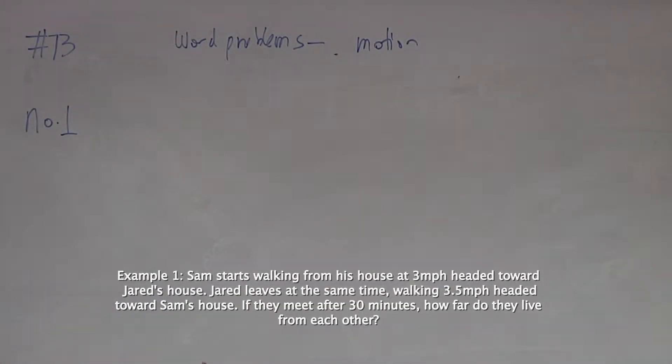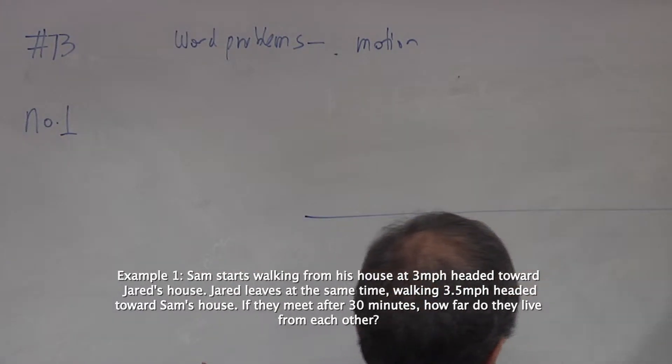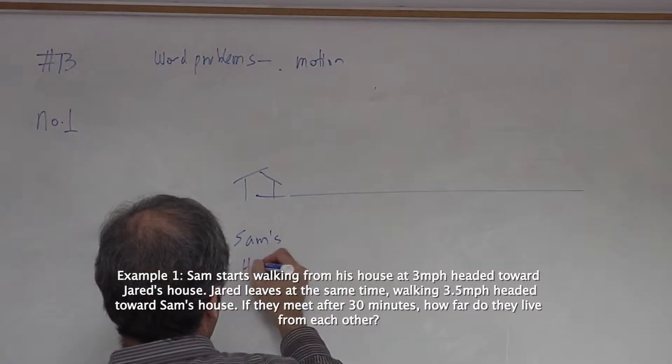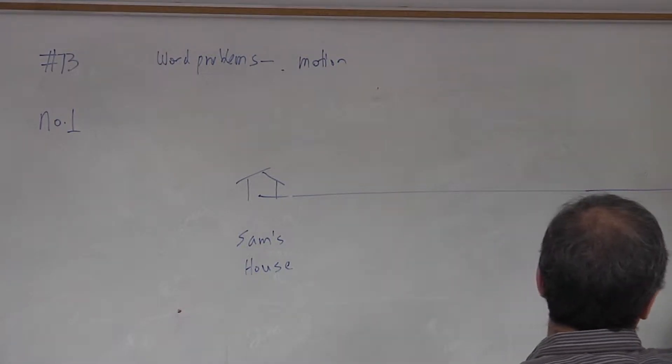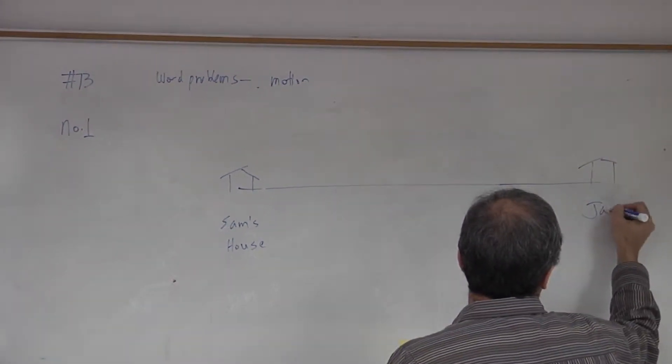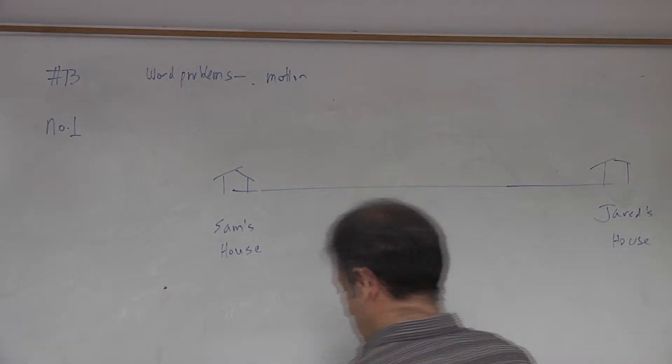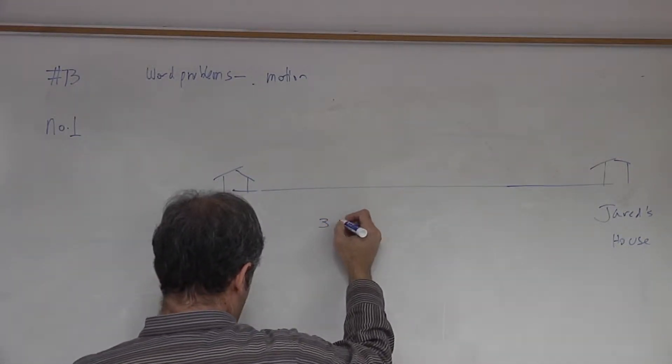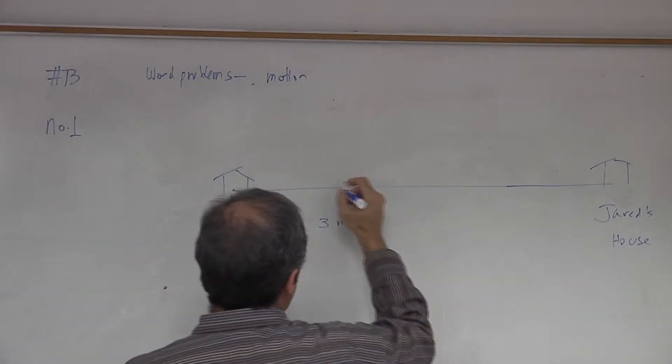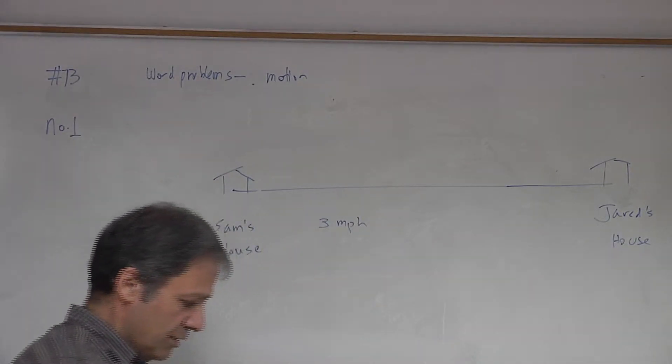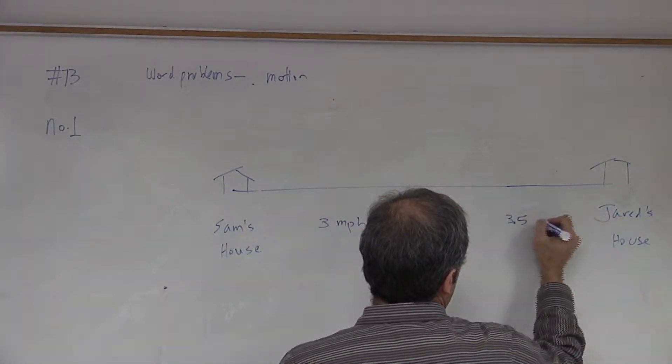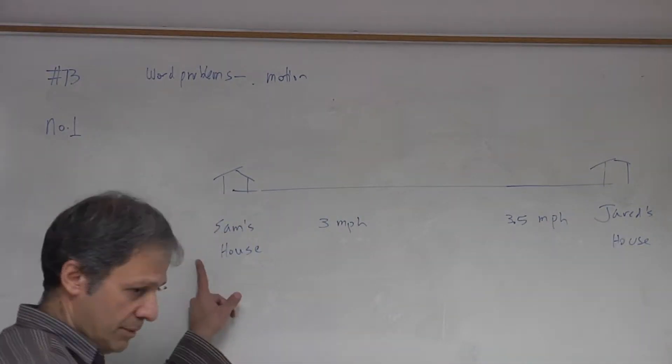Sam starts walking from his house at three miles per hour headed towards Jared's house. So here's Sam's house and we'll make this a little bit longer, and here's Jared's house. Sam starts walking towards Jared's house at a rate of three miles per hour in this direction, and Jared on the other hand leaves his house walking three and a half miles per hour towards Sam's house.